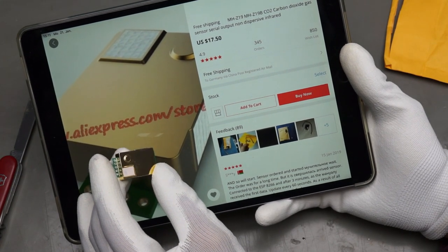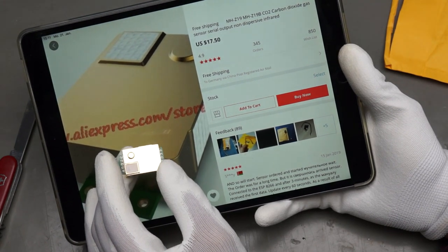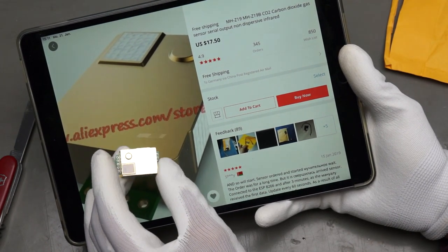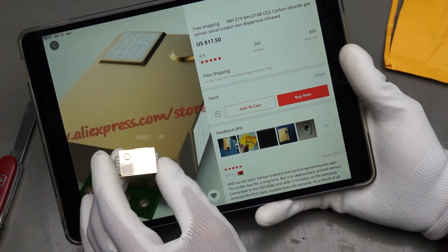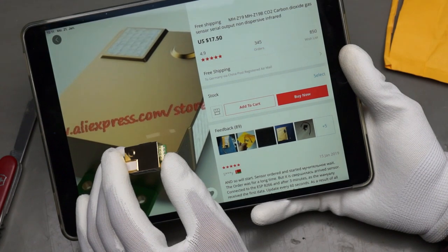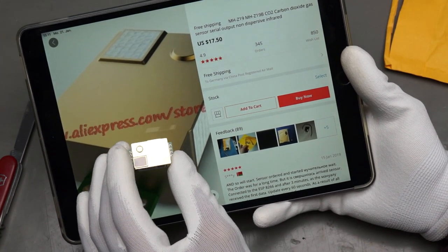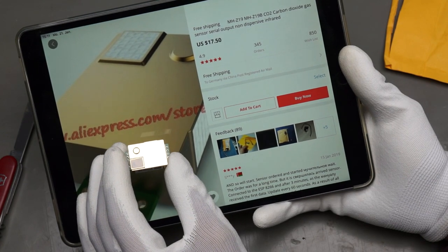Because a viewer wrote me that he wants to use this CO2 sensor to find out if somebody is in a room. Because as everybody knows, humans exhaust CO2. And if we have many humans in a room, the CO2 content should be higher. An interesting concept. Probably not as fast as a PIR sensor. But anyway, an interesting concept.